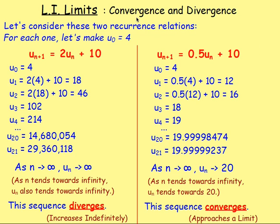After that, we looked at convergence and divergence. If you have a Recurrence Relation — for example, un plus 1 equals 2·un plus 10 or 0.5·un plus 10 — the coefficient in front of un determines whether the relation converges or diverges. If the values keep increasing and tend towards infinity, the sequence diverges; this happens when that coefficient is not between negative 1 and 1. If it is between negative 1 and 1, the sequence tends towards a limit and converges.